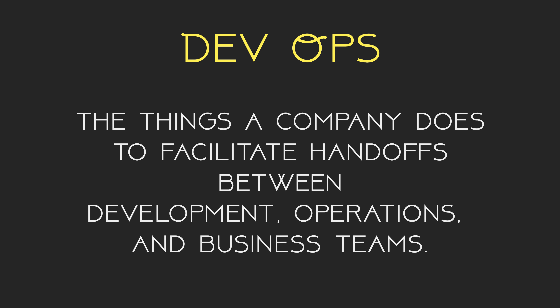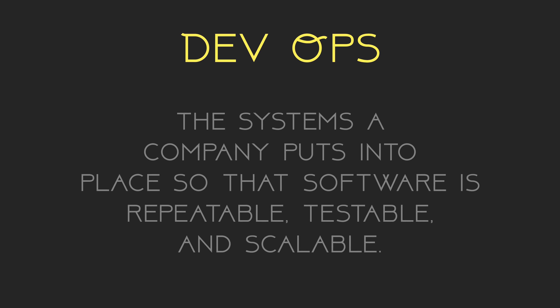After working in industry, I think the easiest way to explain DevOps is in two parts. First, it's the things that a company does to facilitate handoffs between the different members of development, operations, and business teams. Second, it's the systems that the company puts into place so that software is repeatable, testable, and scalable.